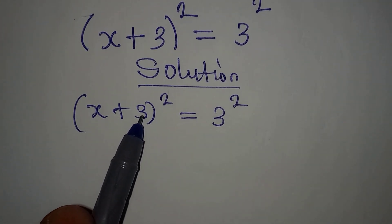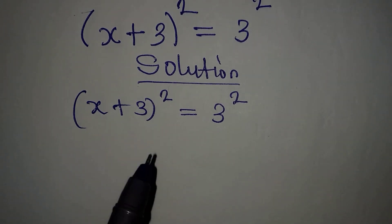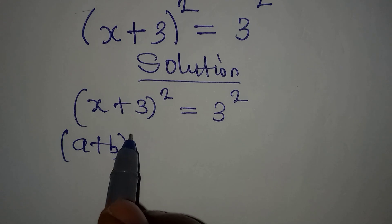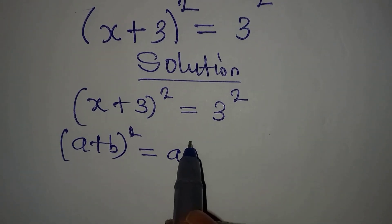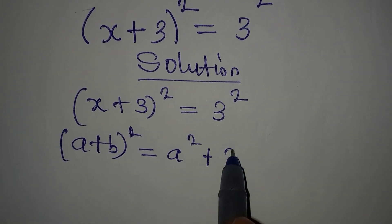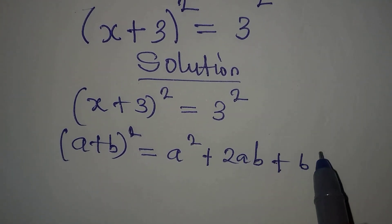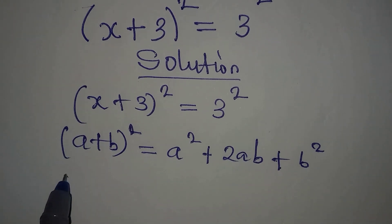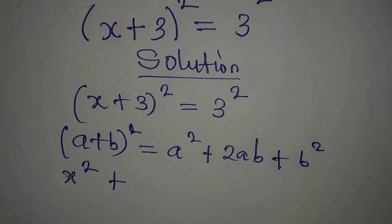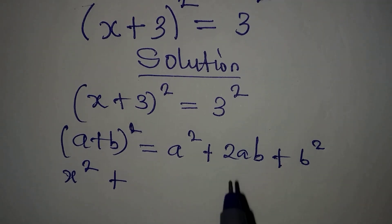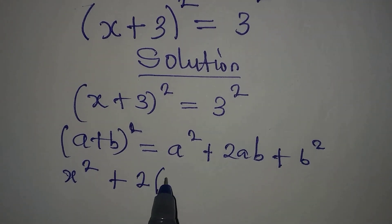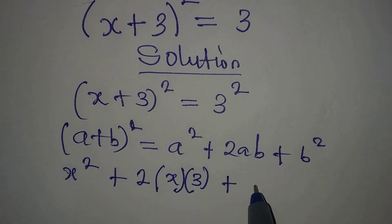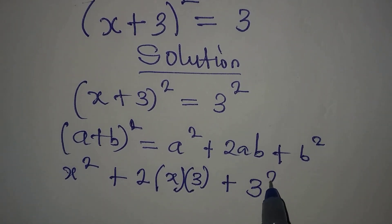Either we expand what we have here. Remember that when you have (a + b) to the power of 2, this is the same as a² + 2ab + b². So our a is x, giving us x², then plus 2ab which is 2 times x times b, and our b is 3. Then plus b squared, so we have 3 squared.